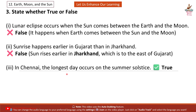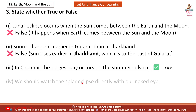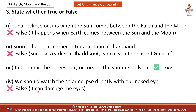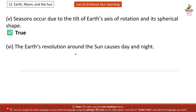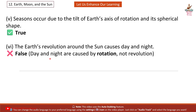3. In Chennai, the longest day occurs on the summer solstice. True. 4. We should watch the solar eclipse directly with our naked eye. False — it can damage the eyes. 5. Seasons occur due to the tilt of Earth's axis of rotation and its spherical shape. True. 6. The Earth's revolution around the Sun causes day and night. False — day and night are caused by rotation, not revolution.